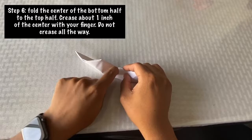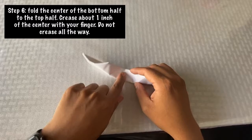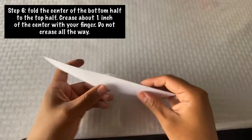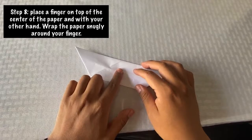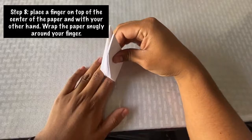But don't crease it all the way where it's going to stay flat. Just crease it enough in the middle where it stays and where you see your fingernail marked on there. Step 7: turn the paper over.